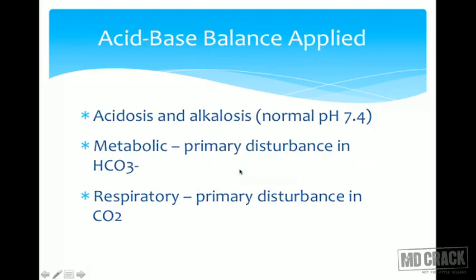Now for the clinically important applied aspects of acid-base balance. If the pH of extracellular fluid falls below 7.4, it is called acidosis; if it rises above 7.4, it is called alkalosis. There are four conditions: metabolic acidosis, metabolic alkalosis, respiratory acidosis, and respiratory alkalosis. Metabolic types result from kidney failure or primary disturbances in bicarbonate secretion, synthesis, or absorption. Respiratory types result from disturbances in CO2 excretion due to respiratory diseases.